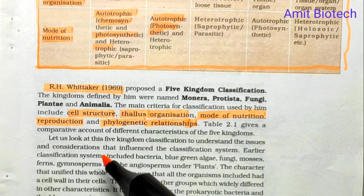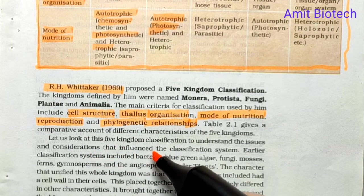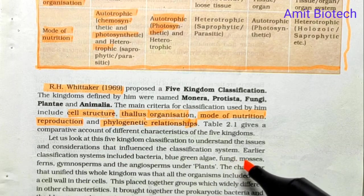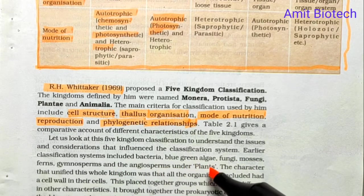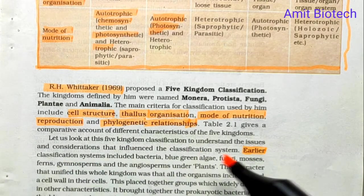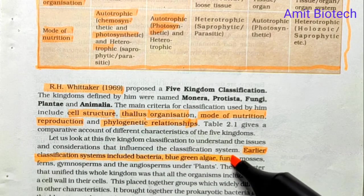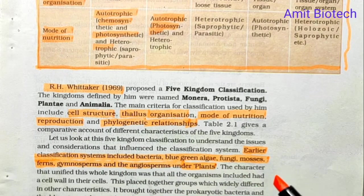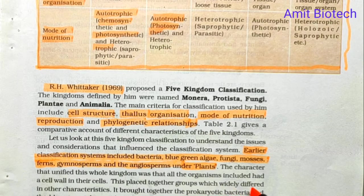Let us look at the considerations that influenced earlier classification systems. Earlier classification systems placed bacteria, blue-green algae, fungi, mosses, and ferns all under the plant category. The character that unified this whole kingdom was that all the organisms included had cell walls, but this grouped together organisms which widely differed in other characteristics.